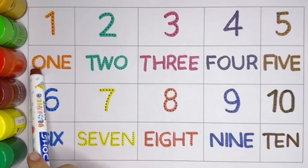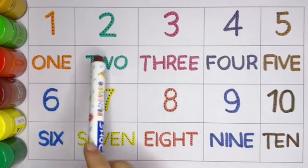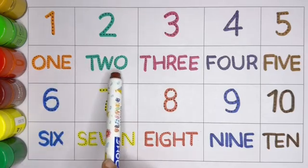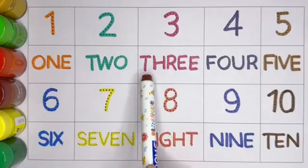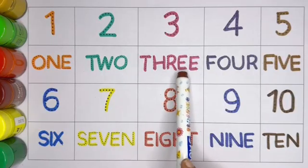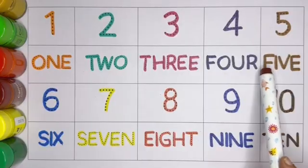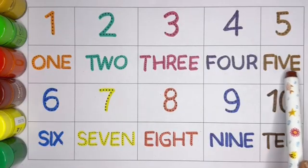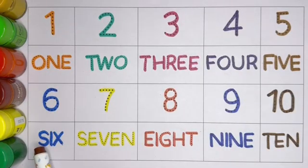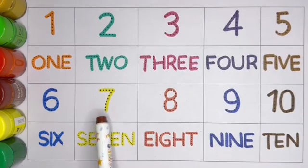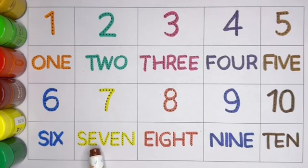1, O-N-E, 1. 2, T-W-O, 2. 3, T-H-R-E-E, 3. 4, F-O-U-R, 4. 5, F-I-V-E, 5. 6, S-I-X, 6. 7, S-E-V-E-N, 7.